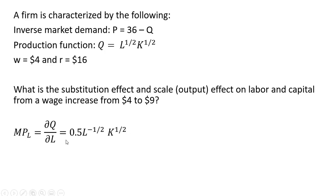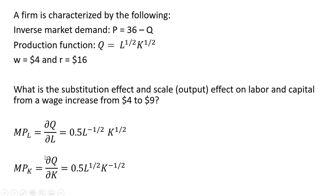The first thing we're going to do is get the marginal product of labor, taking the partial derivative of the production function with respect to L. We get the following result: the one-half comes down in front, and then we subtract 1 from the exponent on the L term, leaving us with this. We get the marginal product of capital via a very similar-looking partial derivative. The one-half on the K comes down in front, we subtract 1 from the exponent on K, and we're left with the following.